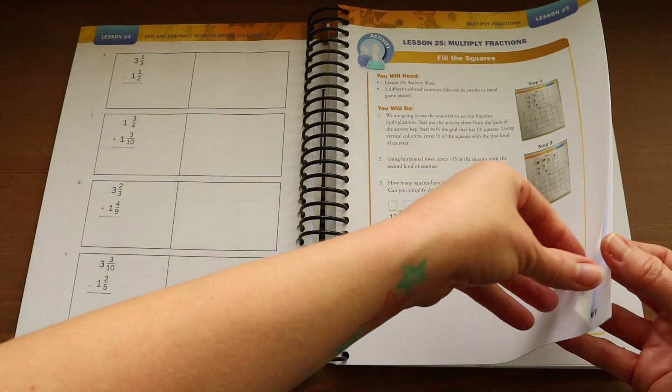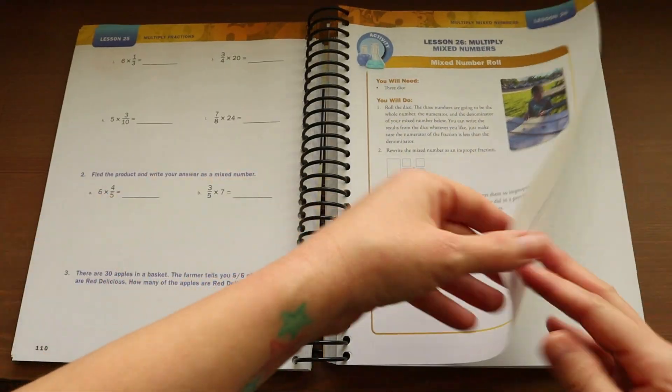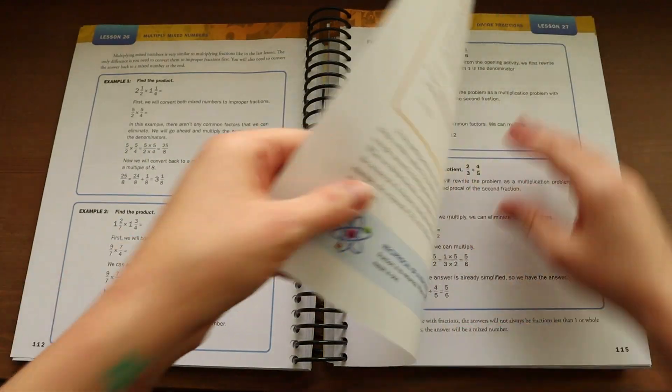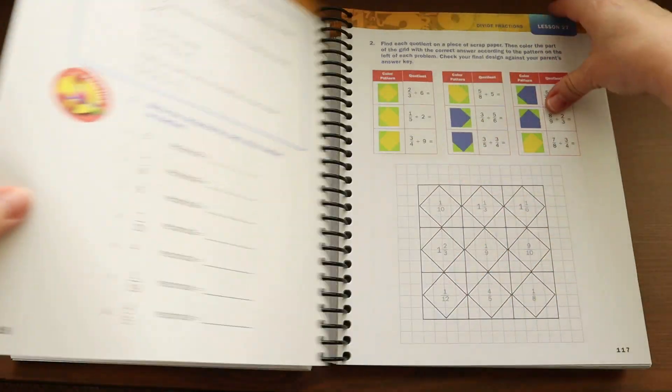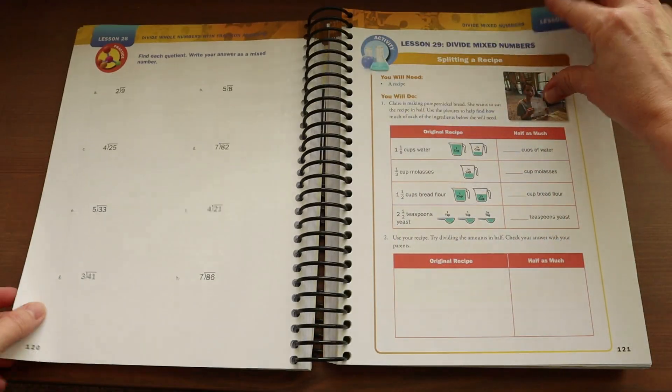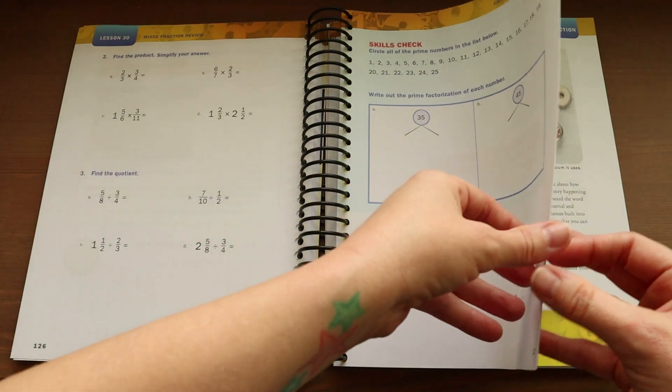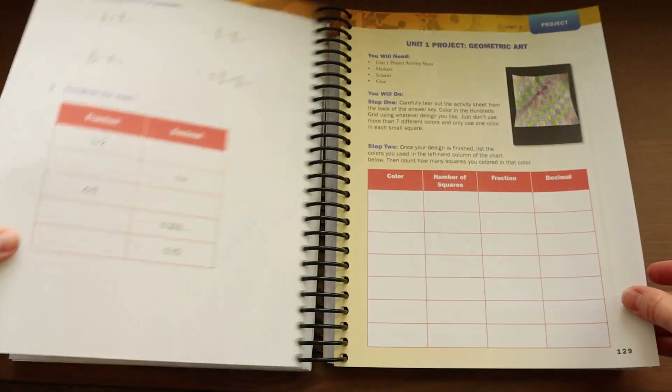Now the goal of this curriculum is for your student to master fractions, decimals, and percents. And they do this by using manipulatives, answering problems, and fun activities. The projects at the end of each chapter is meant to be a time where your child can put everything that they've learned together into a fun and creative, easygoing way.